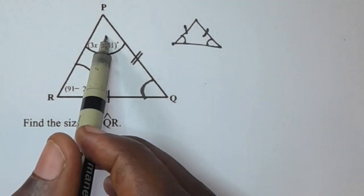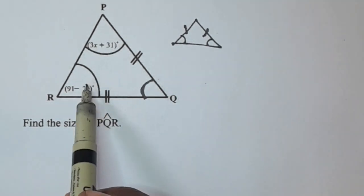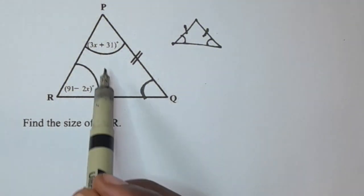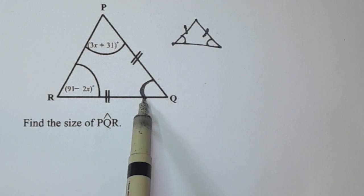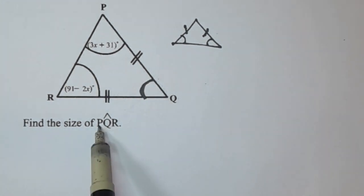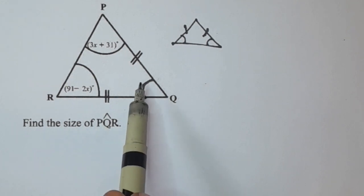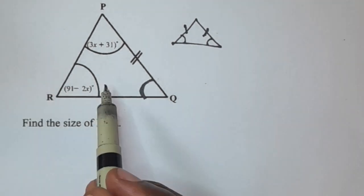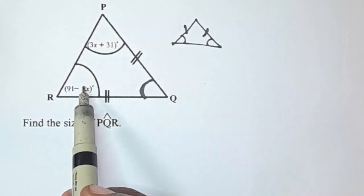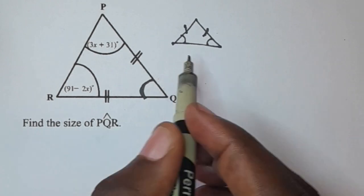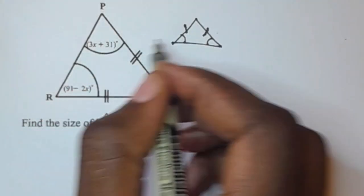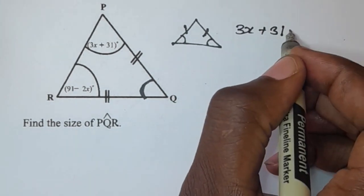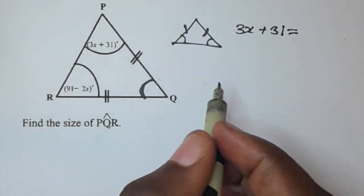So this angle here and this angle are equal because they are base angles. To find angle PQR, we need to first find the value of x. We are going to equate whatever is on this angle to this angle because these base angles are equal. So we say 3x plus 31 equals 91 minus 2x.